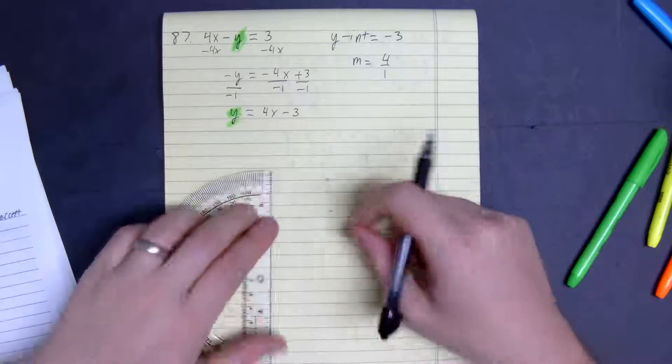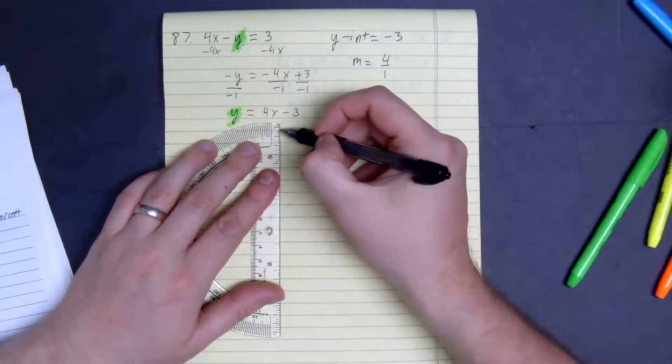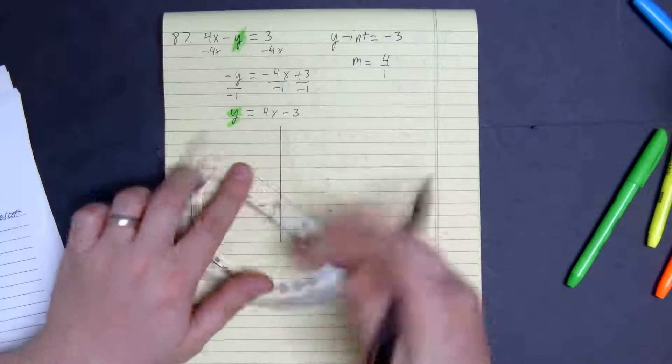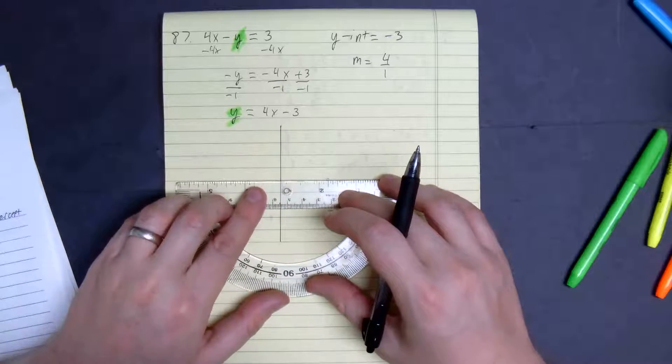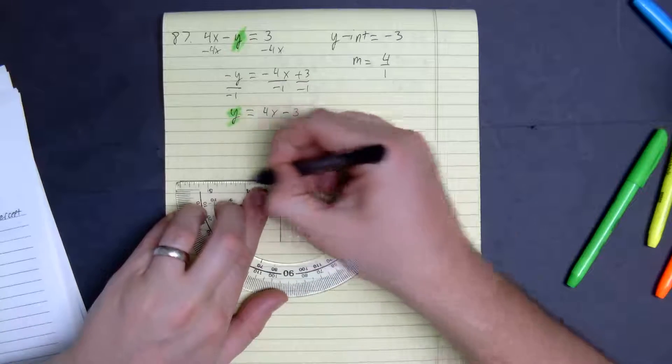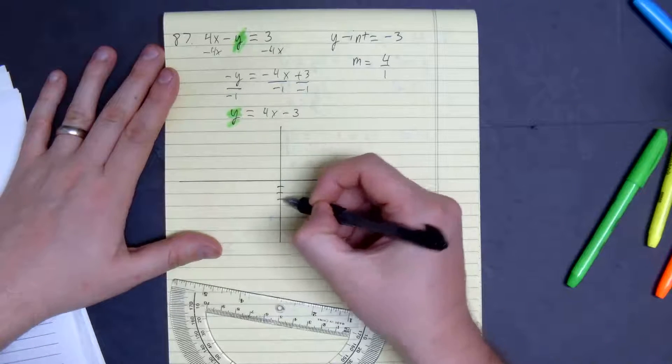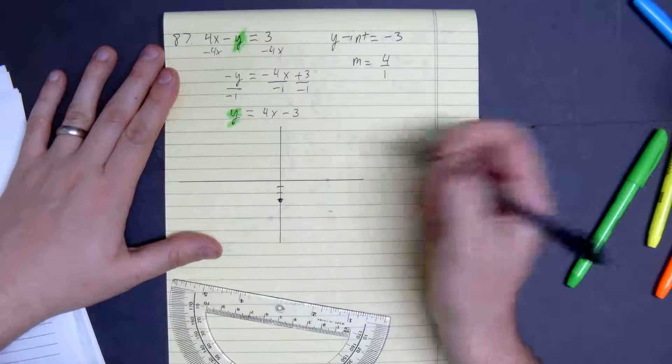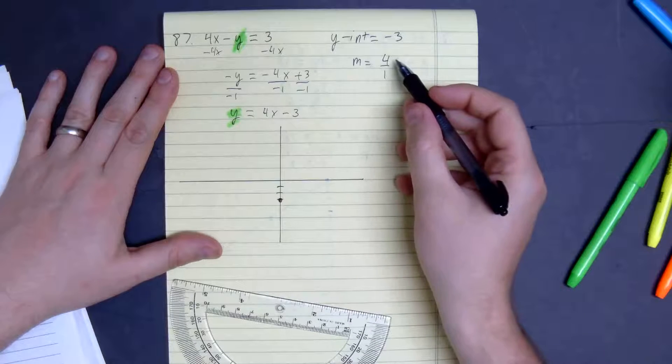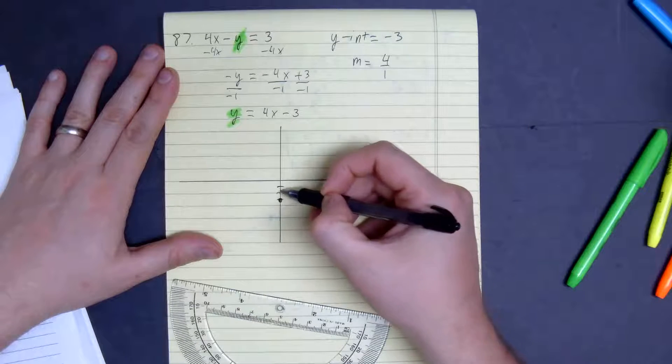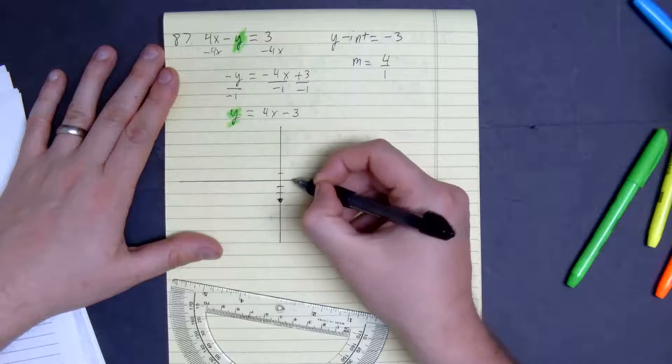From this point, we can do a rough sketch of what it would look like. So y-intercept, we go down 3, 1, 2, 3, and then from here, slope is equal to 4 over 1. That means we go up 4, 1, 2, 3, 4 over 1.